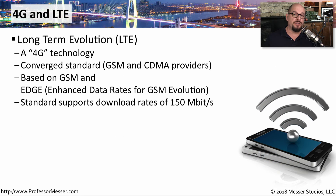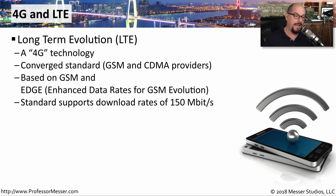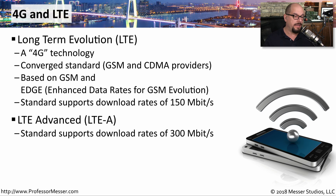These days, most mobile phone providers have moved towards what they call 4G, or the fourth generation of long-term evolution communication, or LTE. This is a converged standard, so we no longer have to worry about a provider giving us a GSM or a CDMA phone. This is based on GSM and EDGE, which is Enhanced Data Rates for GSM Evolution. It finally allows us to completely and seamlessly communicate with voice and data simultaneously over the same network. The original LTE standard supported download data rates up to 150 megabits per second, and LTE Advanced has doubled that to support download speeds of up to 300 megabits per second.